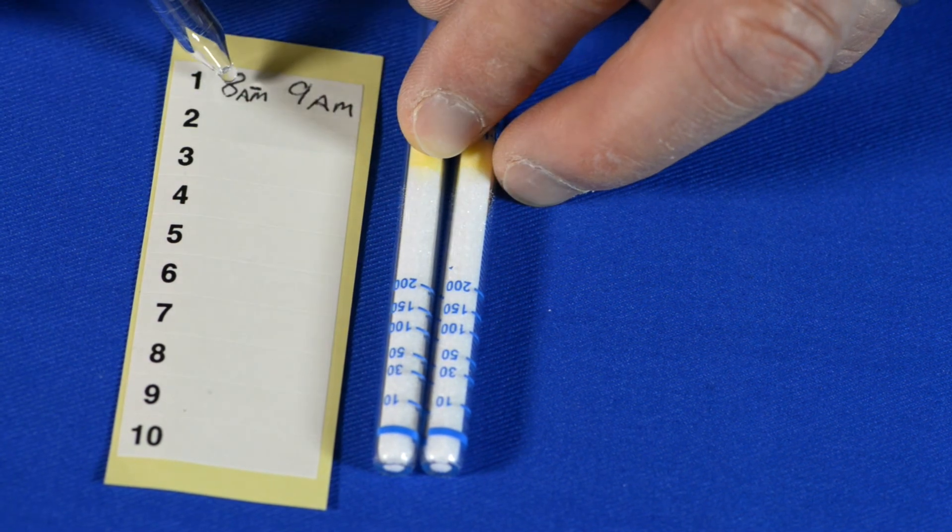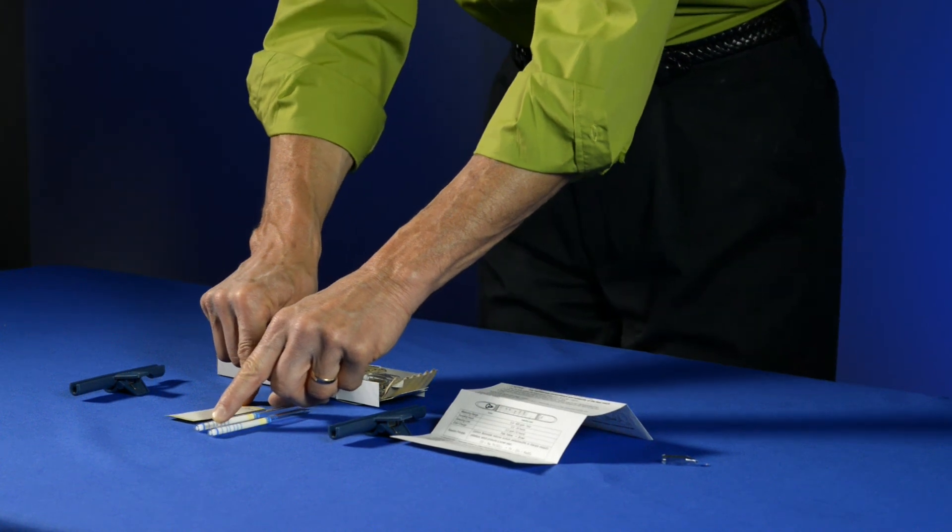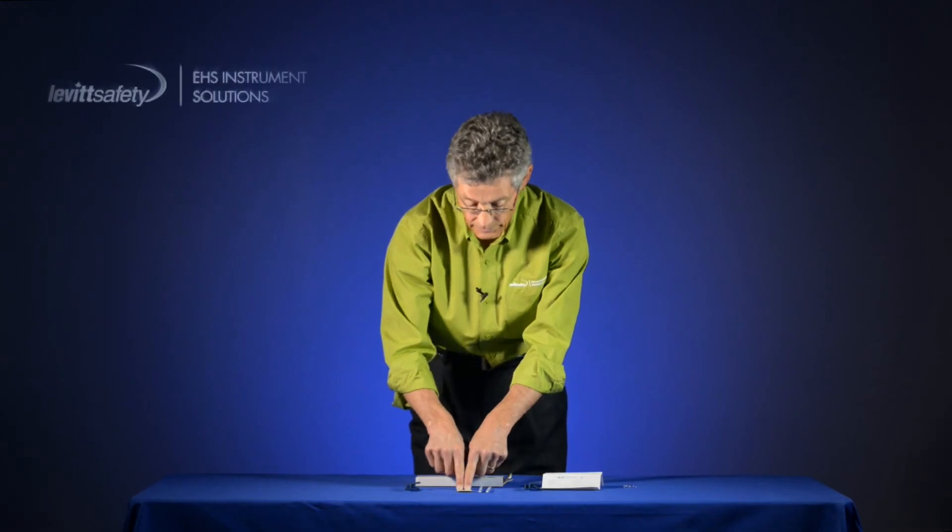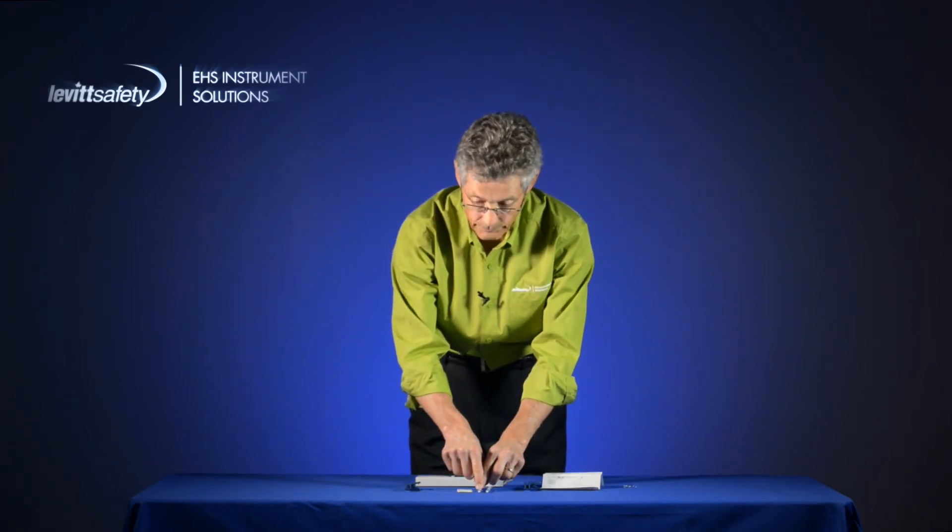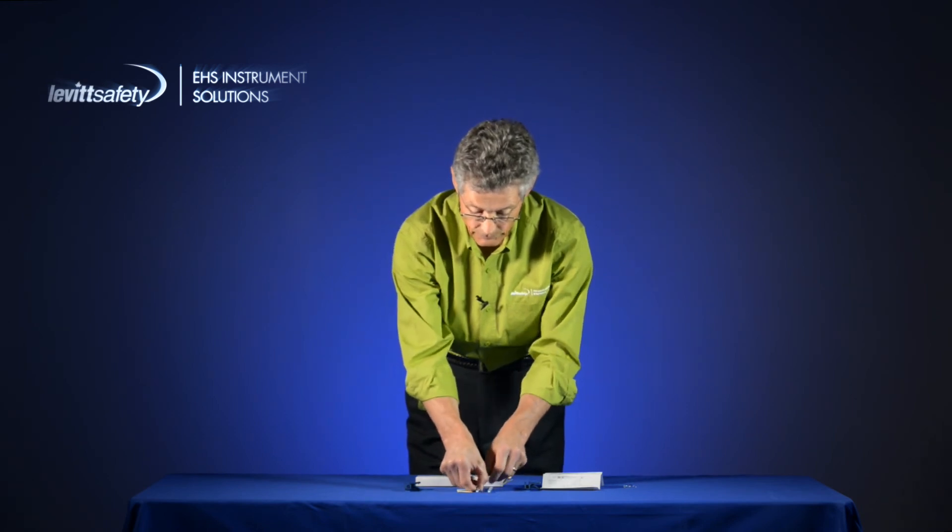I take that 30 ppm, divide it by the one hour, gives me 30 ppm hours of carbon monoxide exposure. If this had been a 10 hour sample instead, it would be 30 ppm divided by 10, which is obviously a much lower concentration of carbon monoxide.